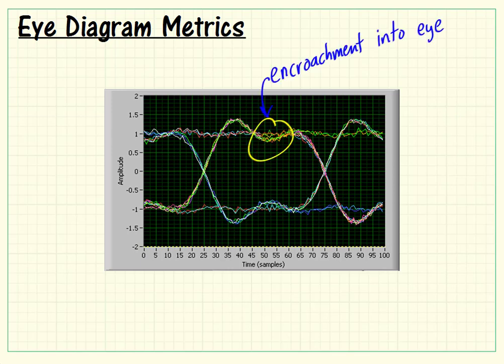As you consider the maximum encroachment into the eye pattern, that's an indicator of the intersymbol interference. And you can define a peak ISI value from that as well.